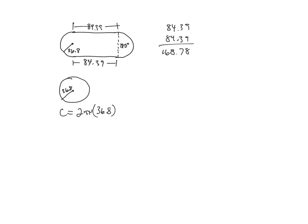Like 36.8 times 2 is 73.6π which equals 231.22. So then I just need to add that back up here. And we get 400 meters, which, that's how long it is around a track.